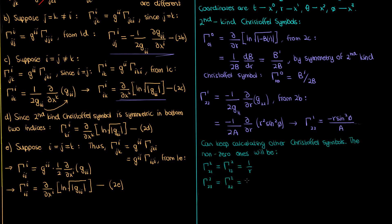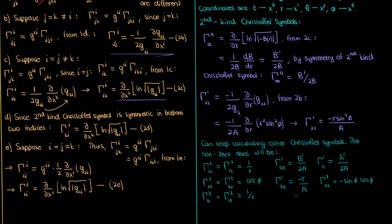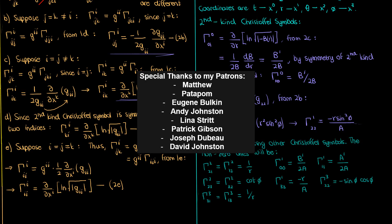You can keep going and calculate the other Christoffel symbols. The metric being diagonal automatically sets gamma super i sub jk to 0 for all-different indices, and only one component depends on an angular coordinate — so you go from 64 possible second kind symbols down to just 13 non-zero ones. I've listed the other 10 non-zero symbols for your reference, and I encourage you to work through the calculations yourself using the general formulas we derived. Anyway, that should do it for this video. I'd like to thank the following patrons for their support, and if you enjoyed the lesson feel free to like and subscribe. This is the Faculty of Khan, signing out.